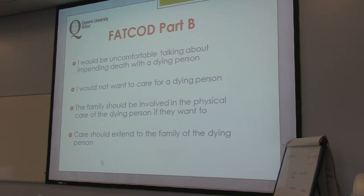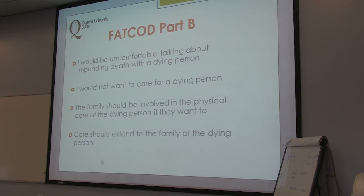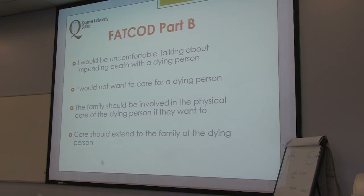Here is an example of some of the 30 items students would have had to answer based on their attitudes — things like: 'I would be uncomfortable talking about the impending death of a dying person,' 'I would not want to care for a dying person,' 'family should be involved in the physical care of the dying person if they want to,' and 'care should extend to the family of the dying person.' This tool has been used with undergraduate populations previously and was suitable for measuring attitudes towards the provision of care as opposed to their own personal experience of death.